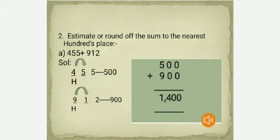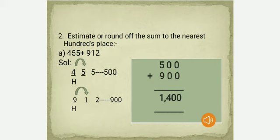Second example: estimate or round off the sum to the nearest hundreds place. For 455 + 912: the digit to the right of the hundreds place in 455 is 5, which is 5 or more, so we round up to 500. For 912, the next right digit is 1, less than 5, so we round down to 900. Adding 500 + 900 gives an estimated sum of 1,400.